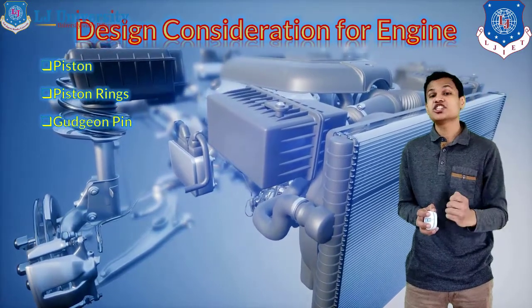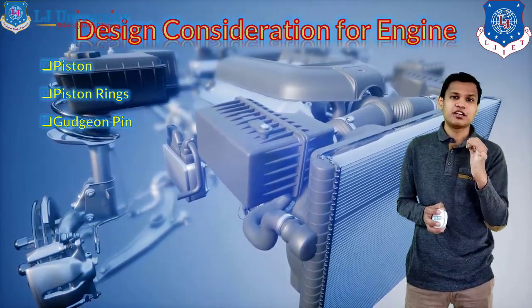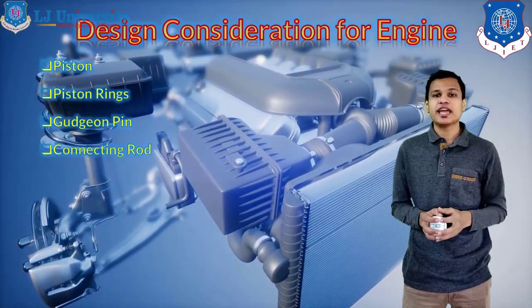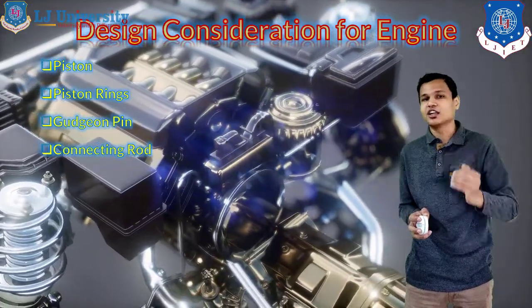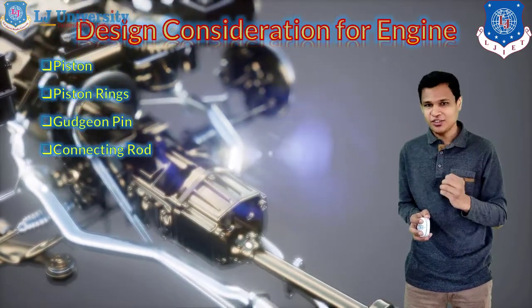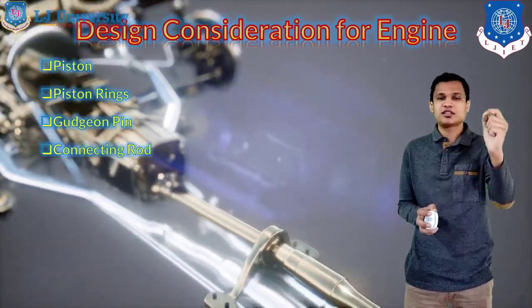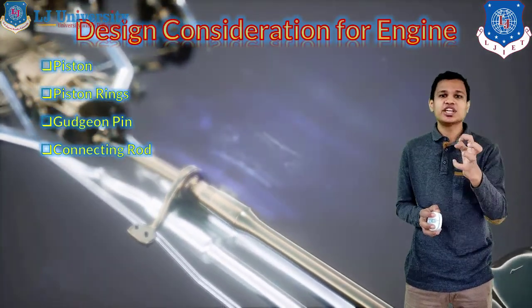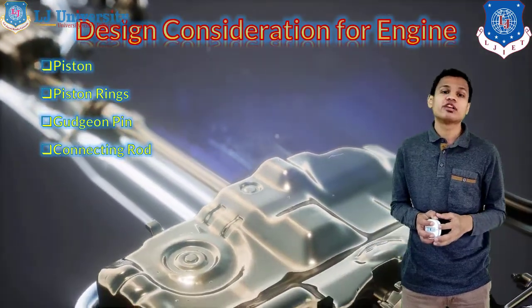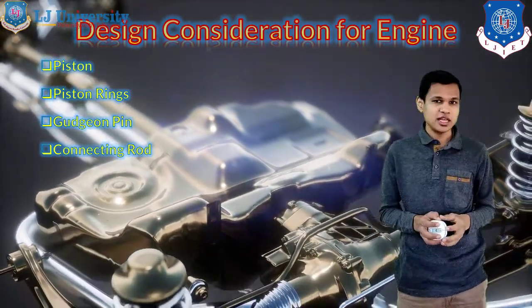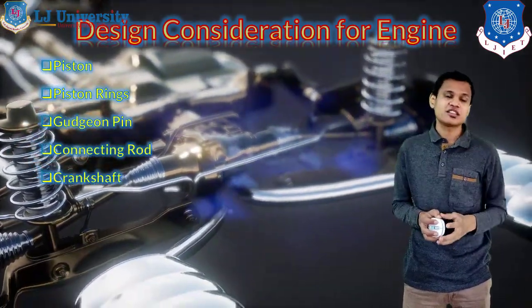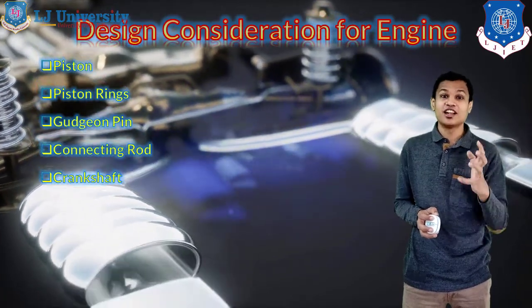The gudgeon pin is used to connect the piston and the connecting rod, and needs to be designed properly so that motion is properly transferred. Next is the connecting rod itself, which transmits the motion of the piston to the crankshaft. The section of the connecting rod will be selected — generally the I-section is used for the connecting rod.